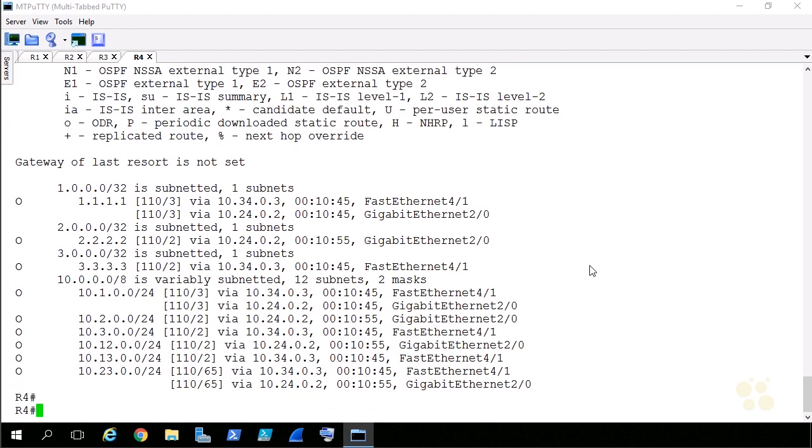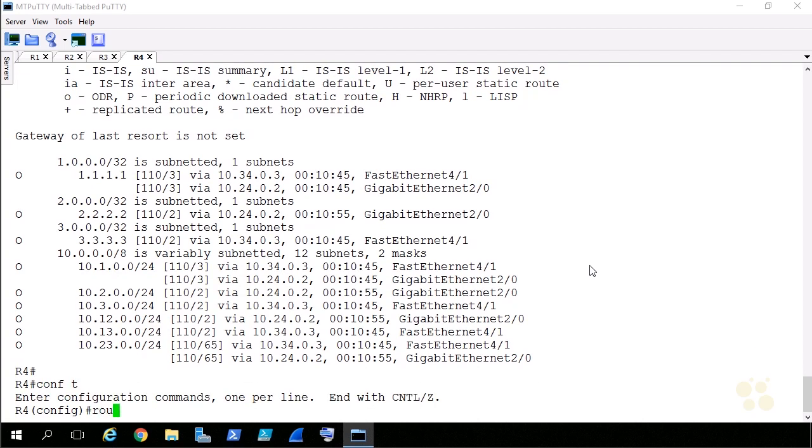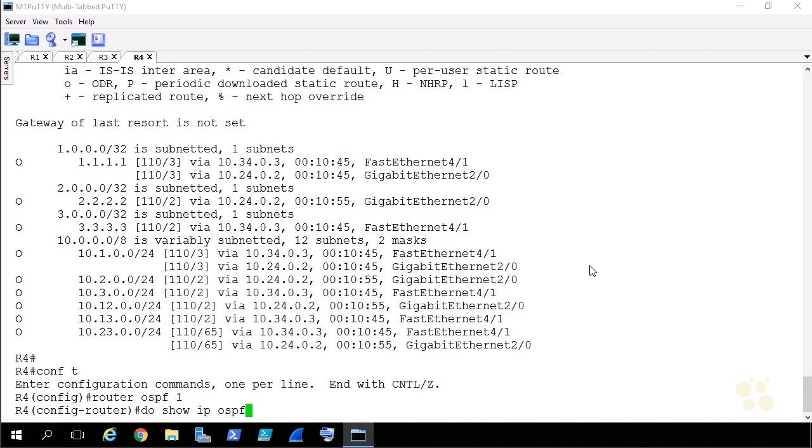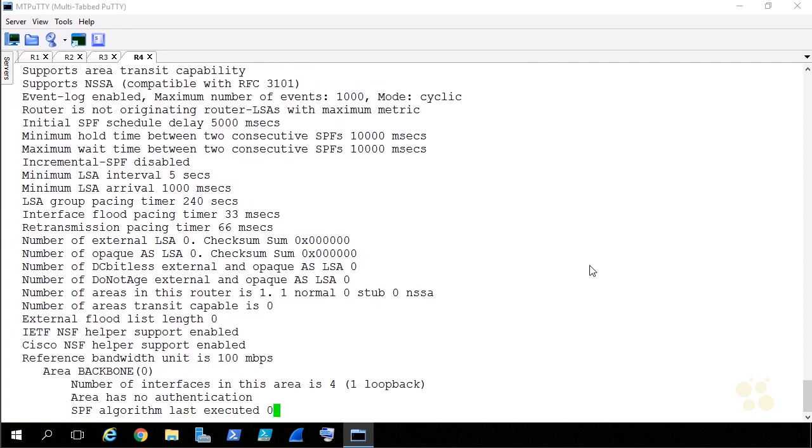And here's how we do it. We go into configuration mode for router OSPF. We're using process ID 1. We'll press enter. Oh, you know what? Before I do that, let me show you how you can verify what the reference bandwidth is that's currently in use. Let's do a do show IP OSPF, press enter, and hit space again, and it is right here. The reference bandwidth unit is 100 megabits per second, and that's our problem. That's your problem right there.